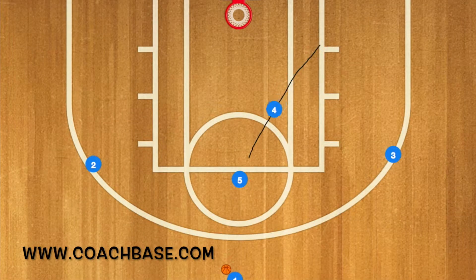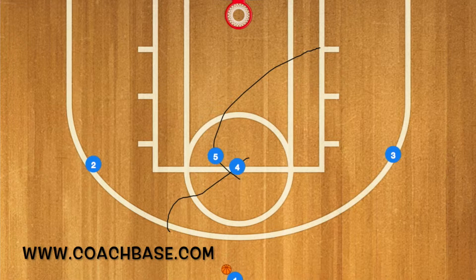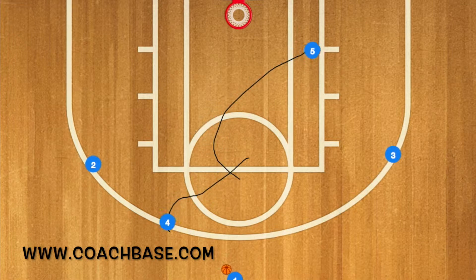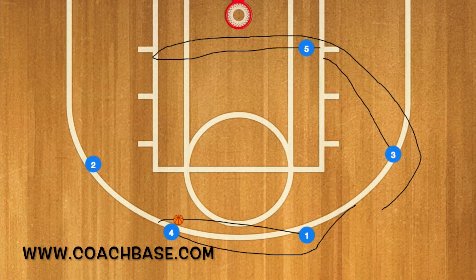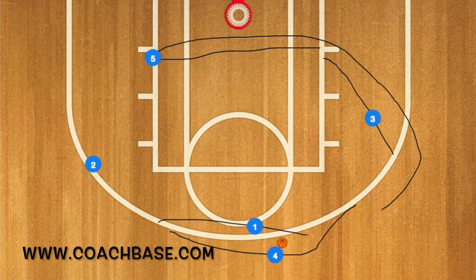First, player four is going to set a screen for player five, and five is going to run to the post while four pops up to the three-point line. Next, player one is going to dribble towards the three-point line and pass to player four, at which point one is going to screen for four.